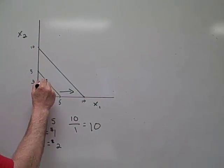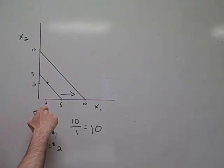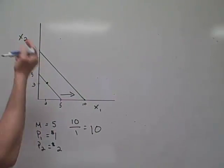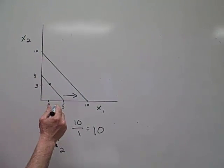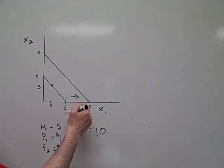On their original budget constraint, this consumer purchased 2 of X1 and 3 of X2. But suppose that now their income is equal to 10,